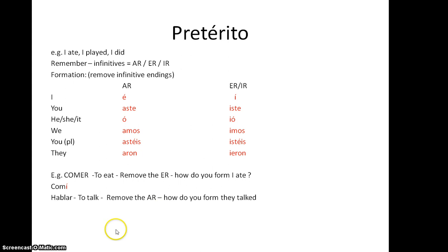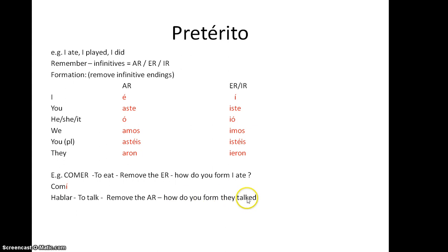Next one: Hablar, which means to talk or speak. We remove the AR to get our stem. Now we want to form 'they talked.' I have my stem 'Habl' with no AR on the end. The 'they' ending is 'aron,' so I add 'aron' on the end — it becomes 'Hablaron,' meaning 'they talked.'